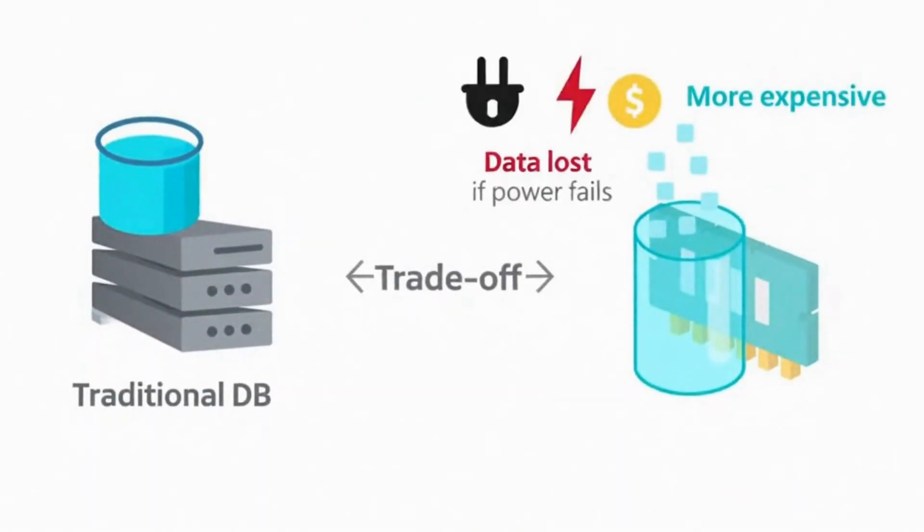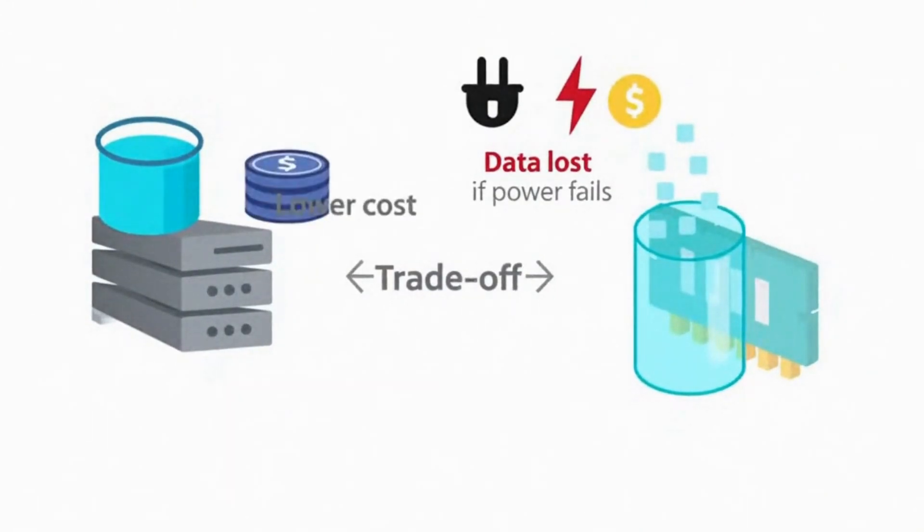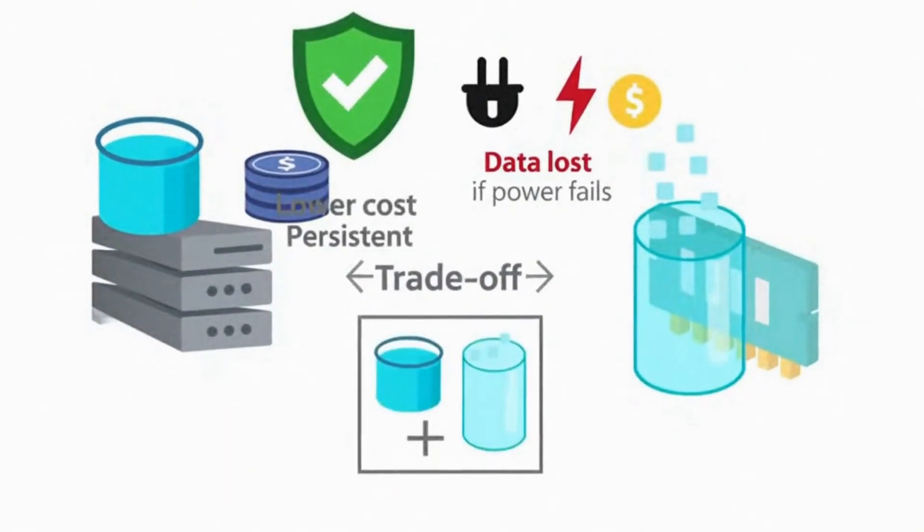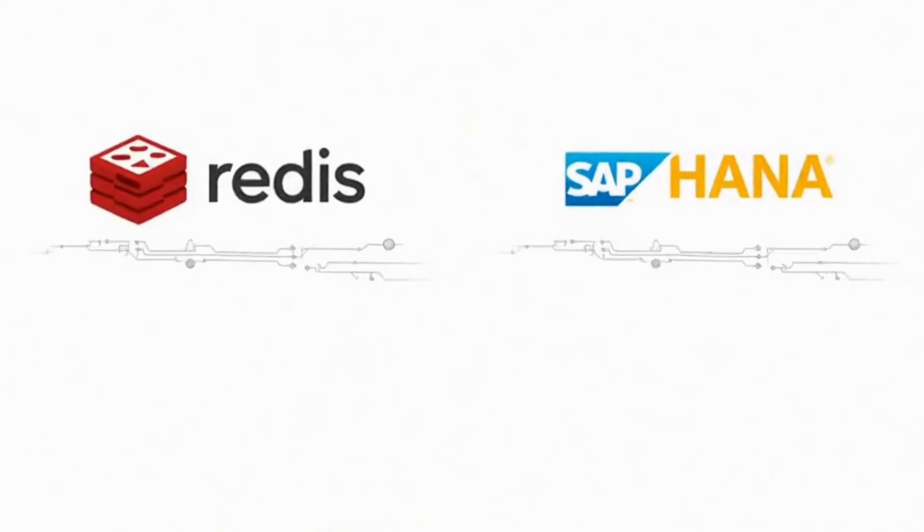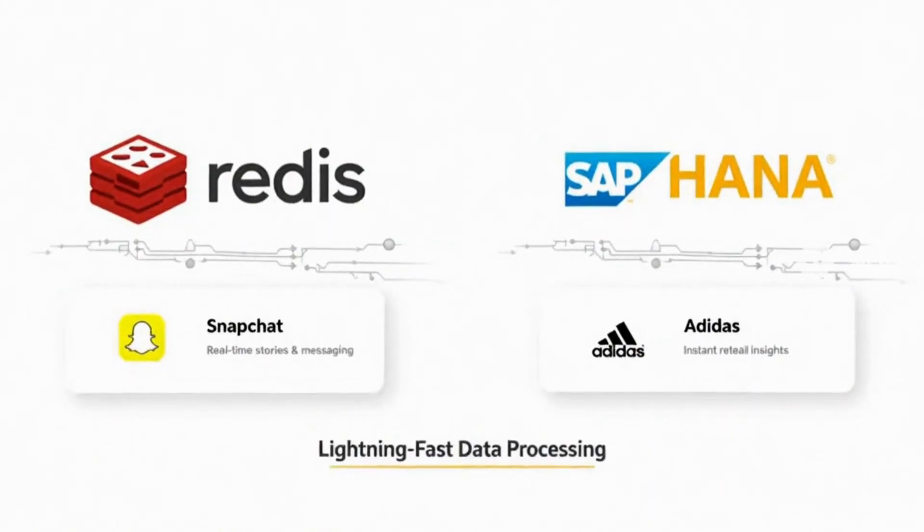The trade-off is that they're more expensive and data can be lost if the power goes out. So they're often used alongside traditional databases. Redis and SAP HANA are popular examples used by companies like Snapchat and Adidas for lightning-fast data processing.